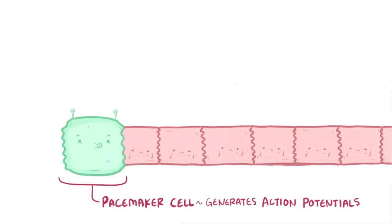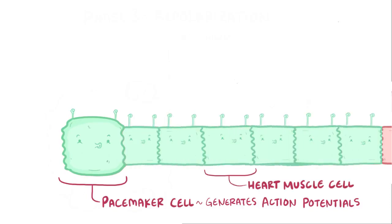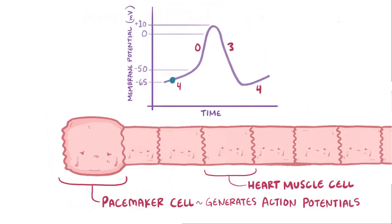As a quick recap, pacemaker cells generate action potentials automatically. Each action potential spreads through the heart muscle cells in a process called a depolarization wave, and each depolarization wave leads to a single heartbeat. For pacemaker cells, there are three phases: phase four which is the slow depolarization phase, phase zero which is the rapid depolarization phase, and phase three which is repolarization.